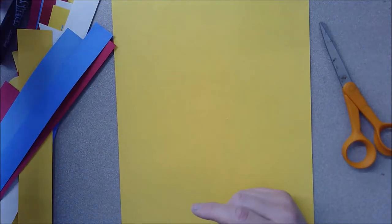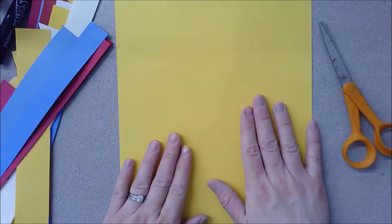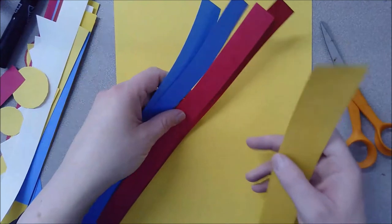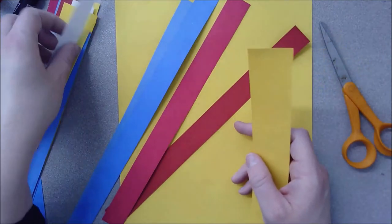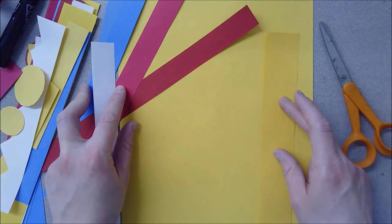All right, let's get started. So I've decided for my background to use yellow. That means any of the pieces I put on top are going to have to be some of the other primary colors. As you can see, if I put yellow on top of yellow, you're really not going to see it very well.